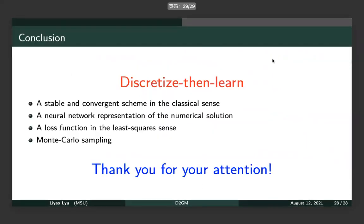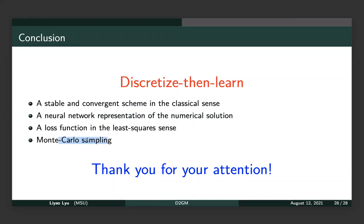In conclusion, we find that we need to fully discretize the equation before performing the learning. We also find a convergent scheme with respect to h in the classical sense. We provide a neural network representation of the numerical solution, with the loss function in the L2 sense, and we use Monte Carlo sampling to reduce the computational cost.